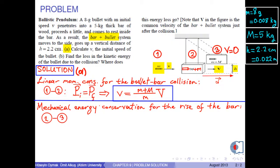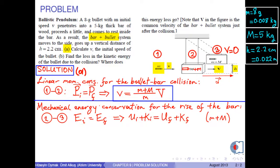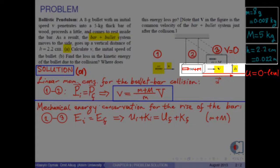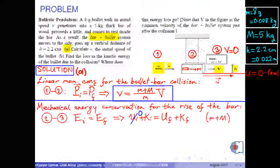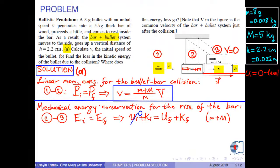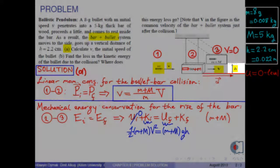Now, if we write the mechanical energy conservation for the rise of the bar — that is, for positions 2 to 3 — we have initial mechanical energy equals final mechanical energy. The sum of the initial potential and kinetic energies equals the final potential and kinetic energies. Taking the bottom level as zero gravitational potential energy, the potential energy at position 2 is zero. The initial kinetic energy is one half (m plus M) times capital V squared, and the final potential energy is (m plus M) times g times H, since the system is at height H above the bottom level.